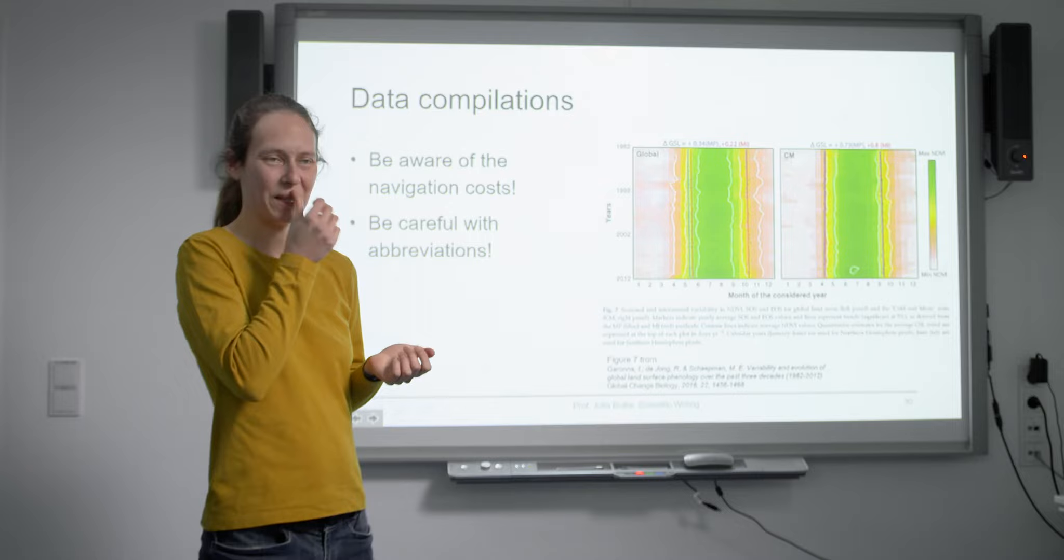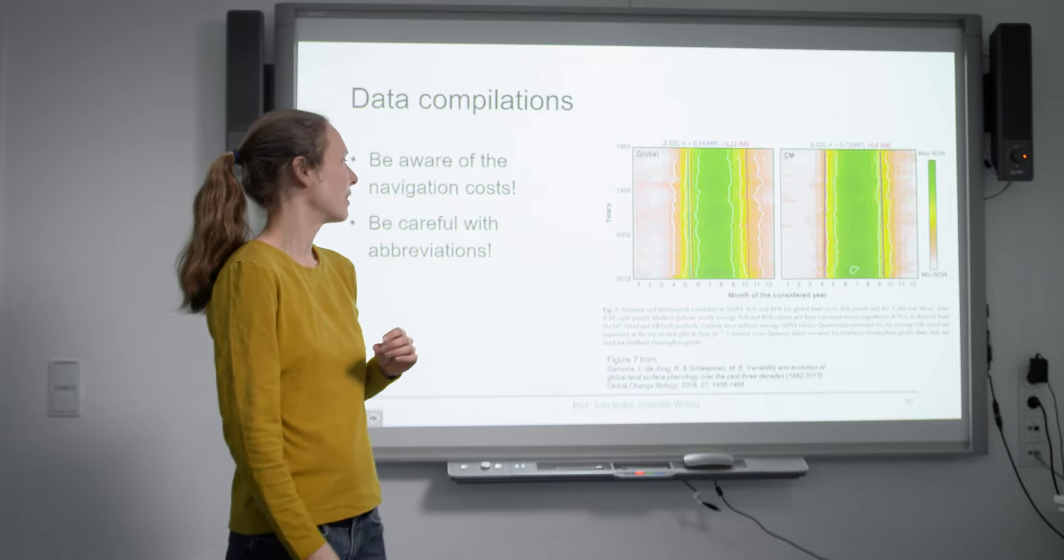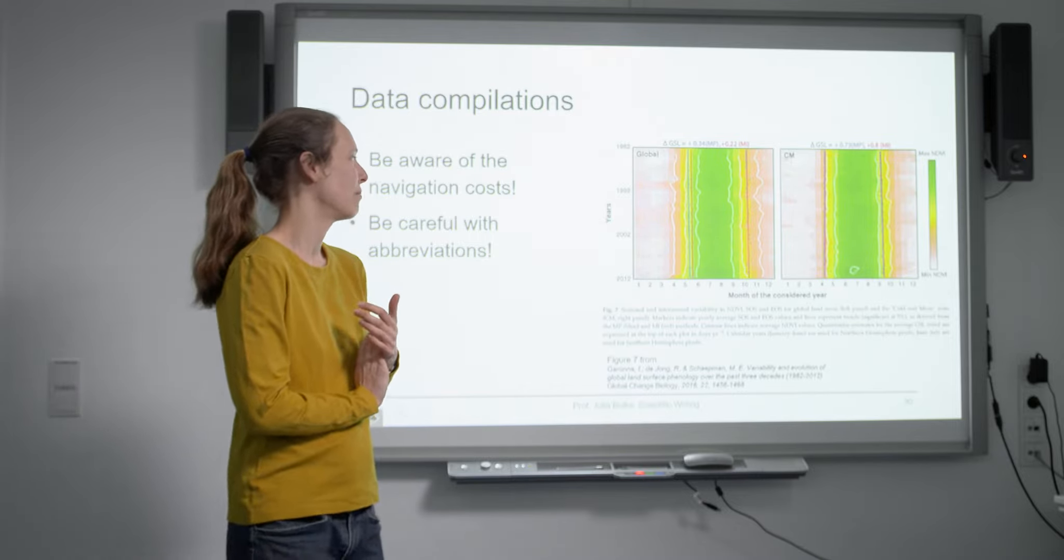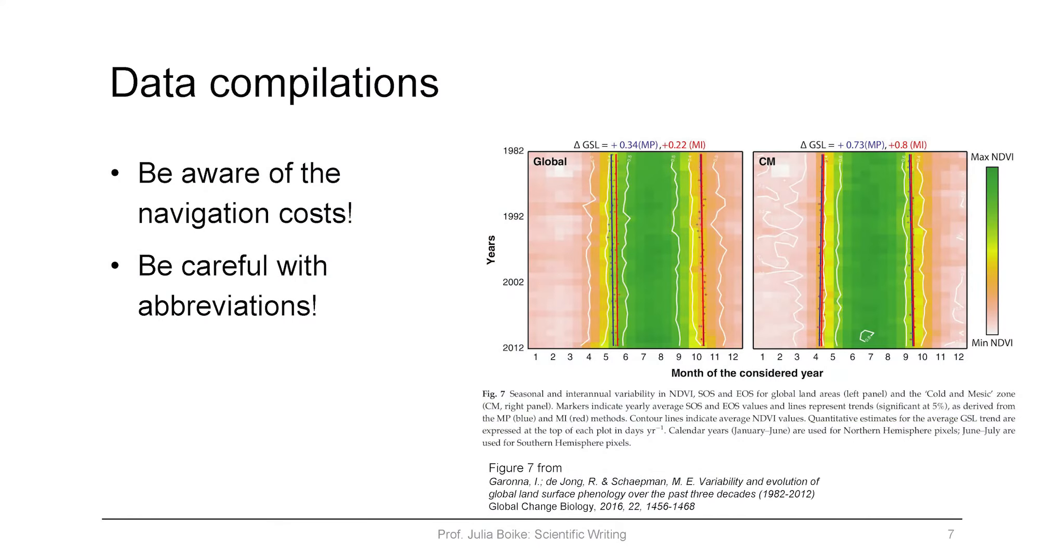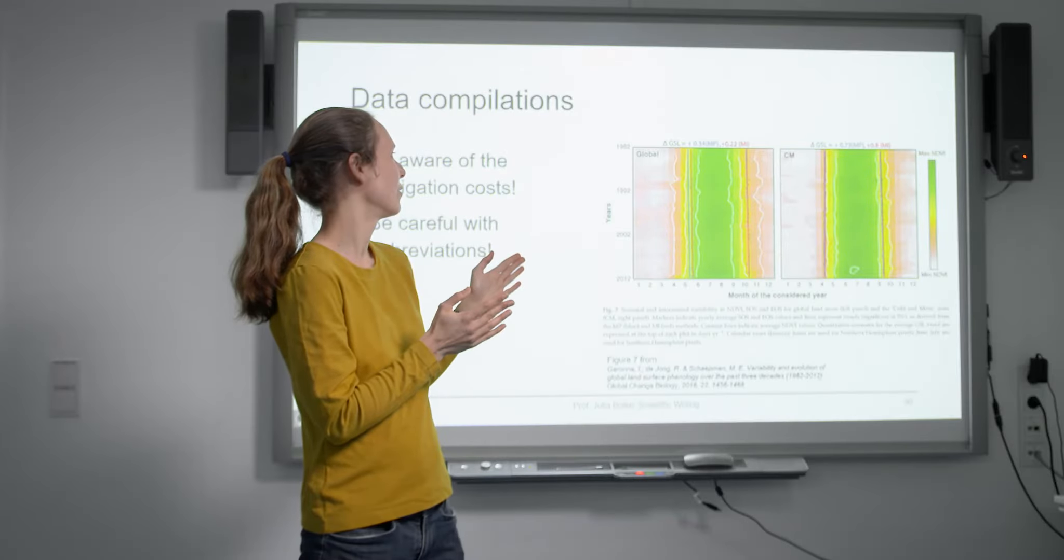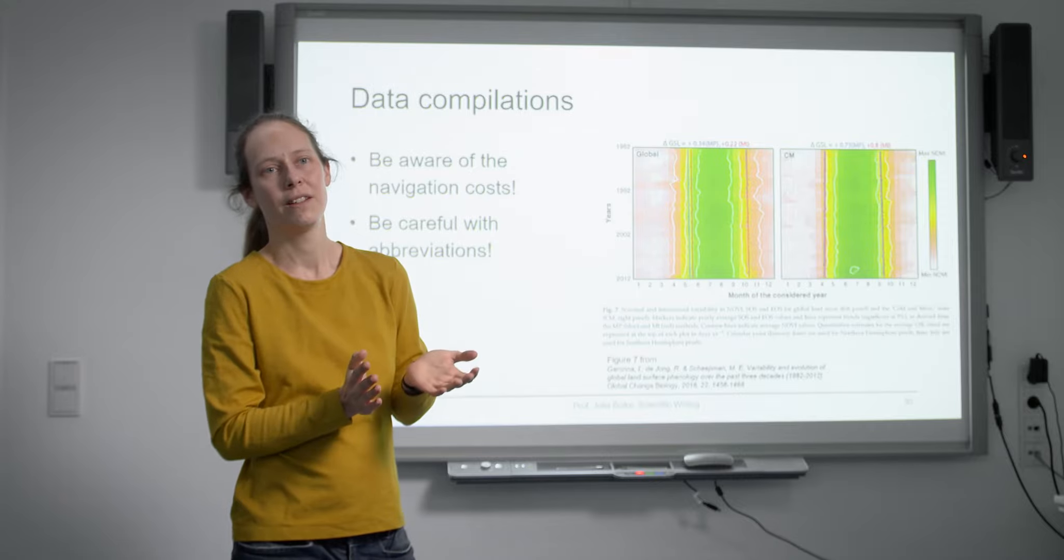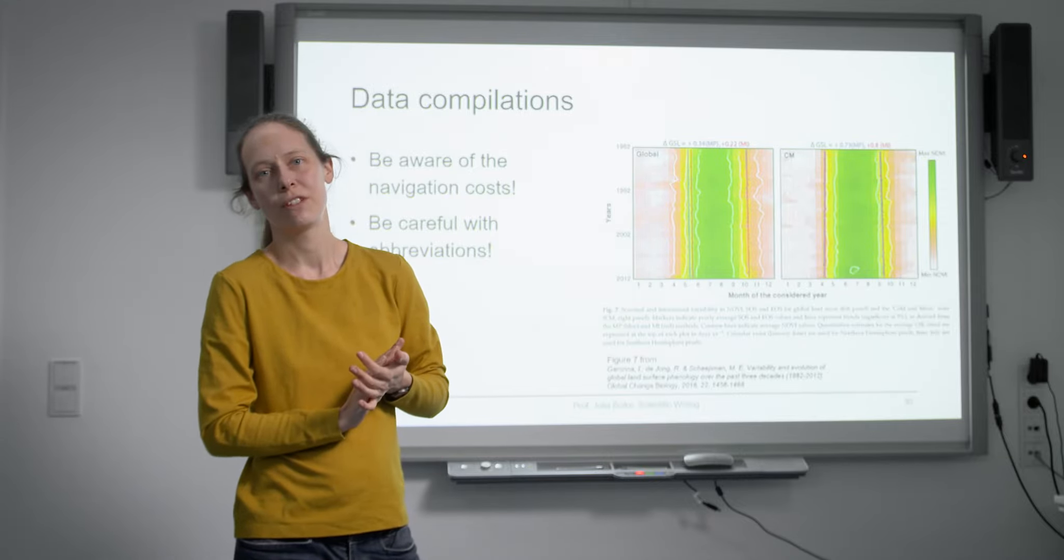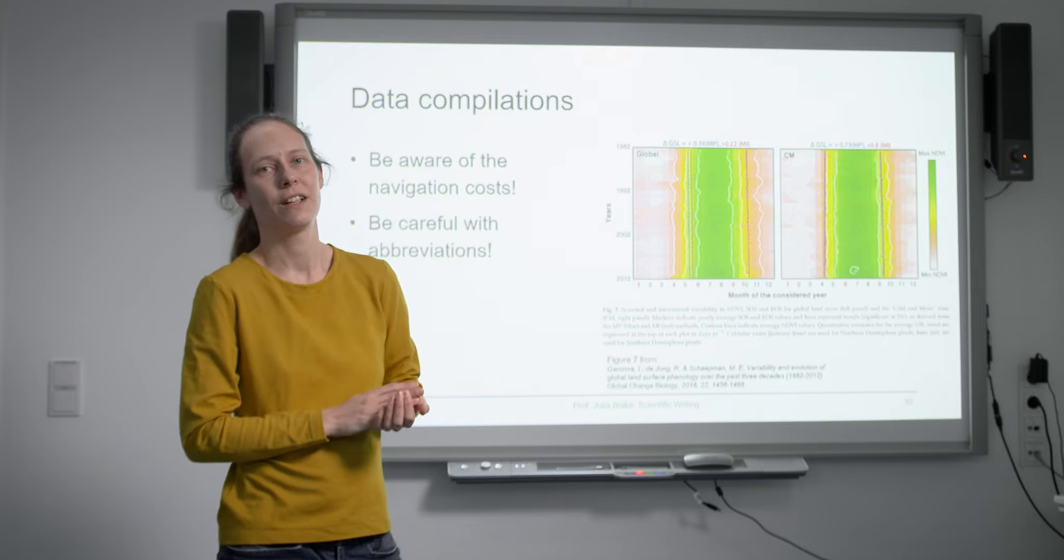Here I think the main point is that these red or blue lines actually spread, so throughout the years the growing season gets longer both on a global scale and for this one sub-region which is called cold and mesic zone. But it's hard to see and I find it a bit difficult to include different ways of calculating these growing season lengths here, so blue and red are just different methods. I would have thought maybe it's better to concentrate just on one of these methods to make this figure a little bit easier.